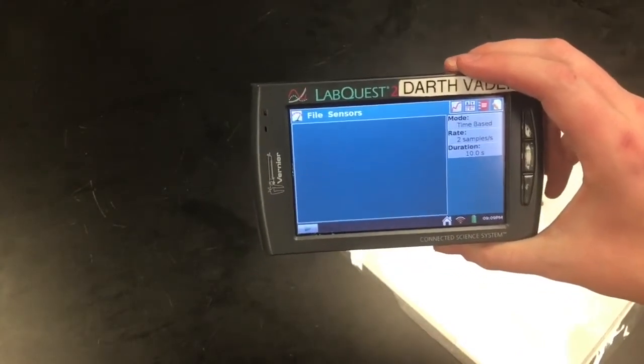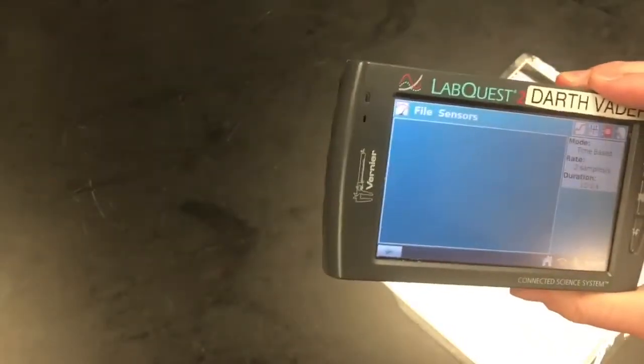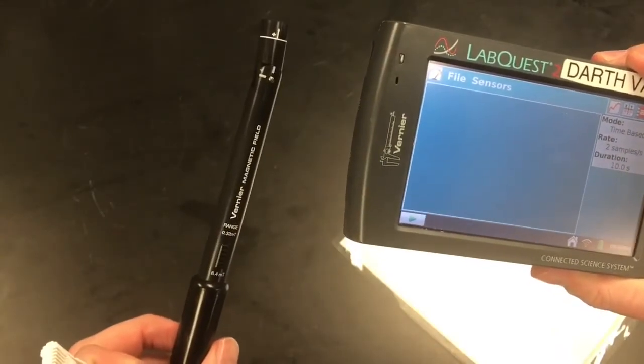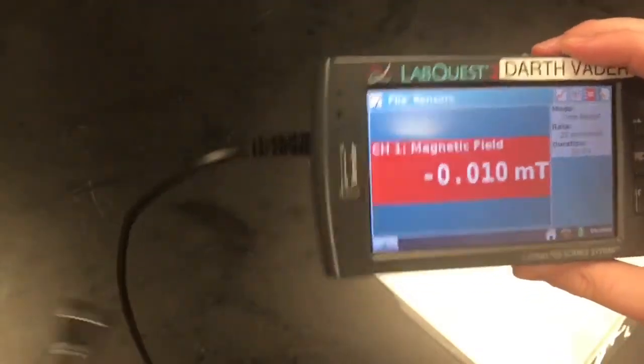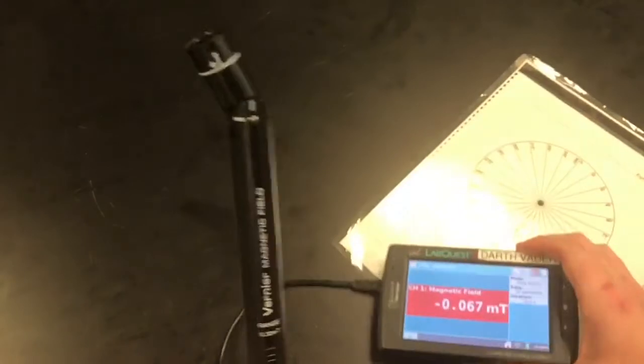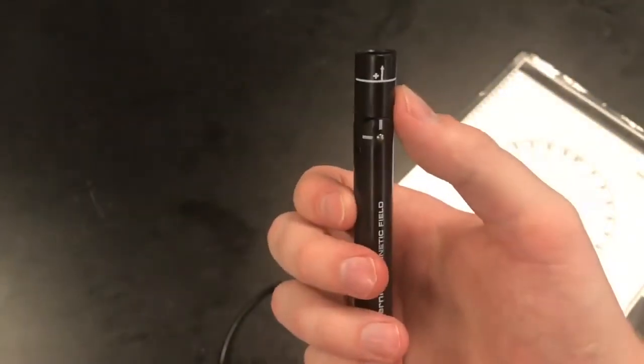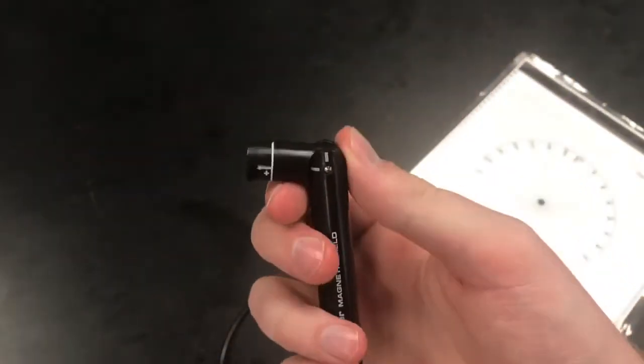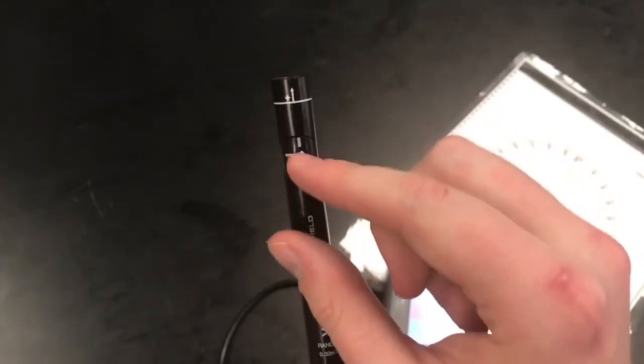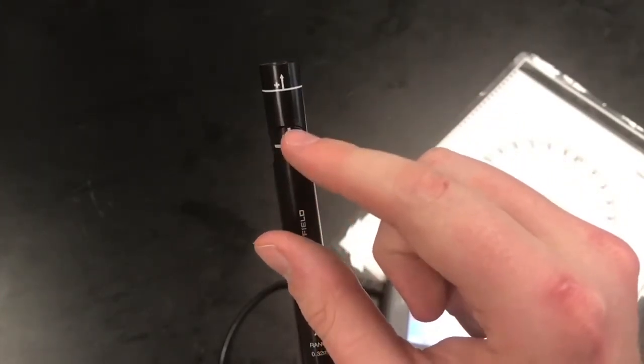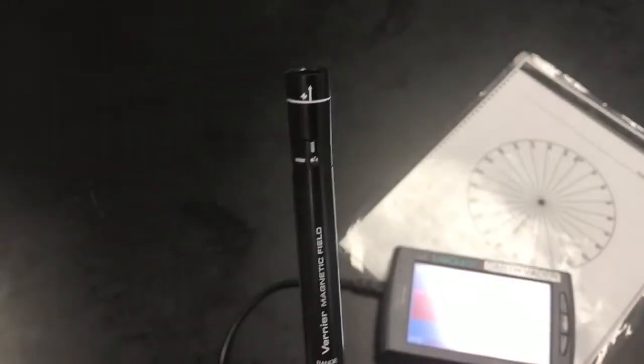We can set up our LabQuest device right away, so I'm gonna take my magnetic sensor and plug it into channel one. One quick thing about this magnetic sensor: you can pivot this in two directions. We're gonna be using both for this lab, so you can pivot straight ahead or to this side right here. They're marked right here and here. You can't pivot this back—it's not gonna work and it'll probably break the probe.